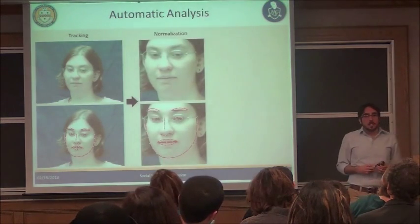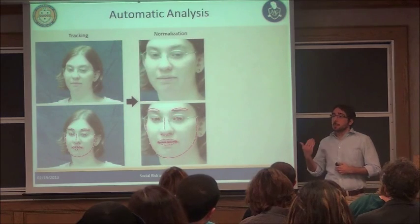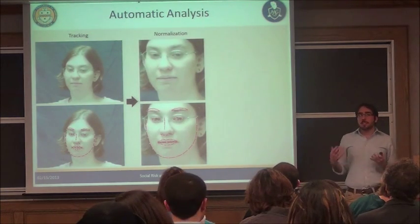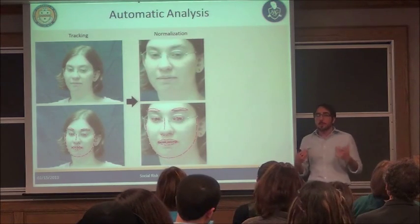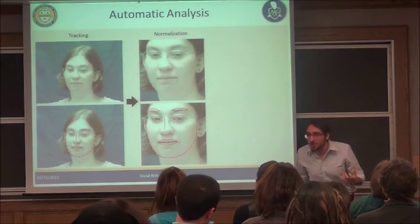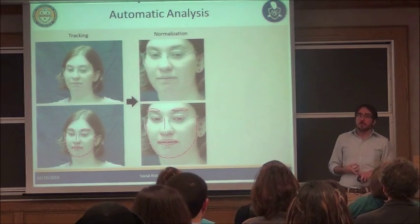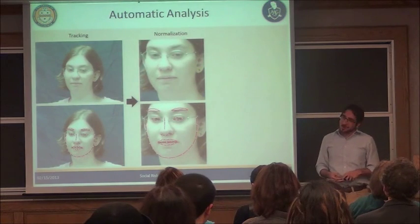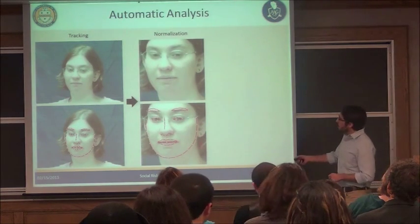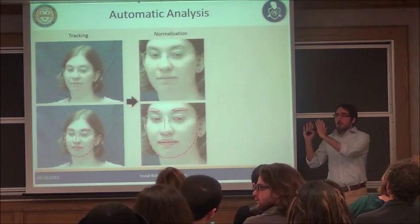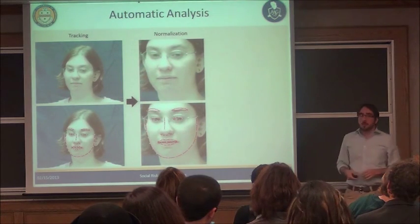The next step is normalizing. We want to compare different expressions in the same person, but many things can change the apparent shape of the face without being related to expression — her mouth might look bigger because she's smiling, or because she's leaning closer to the camera. We need to control for changes in head pose, correcting for pitch, yaw, and roll, and also for scale. We work the image back to being as frontal as possible.